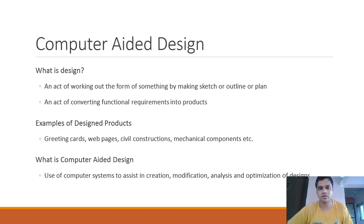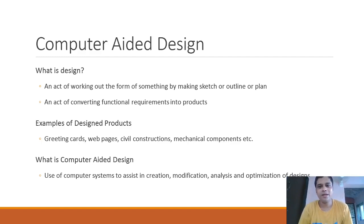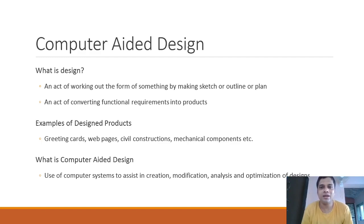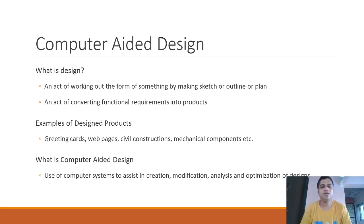Let us first find out what design is. Design is an act of working out the form of something by making a sketch, outline, or plan. When we want to make anything, we think and plan how we are going to make it, then we start making it. There is a defined flow for making every product, and that plan is what we call design. It is also called an act of converting functional requirements into products.